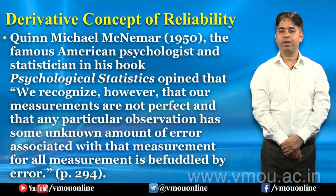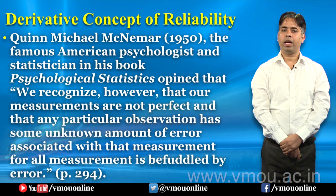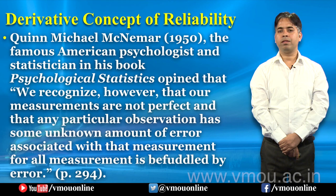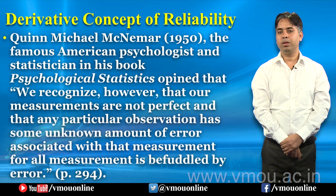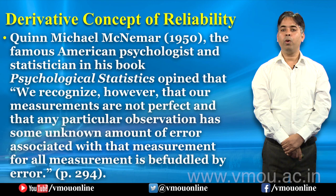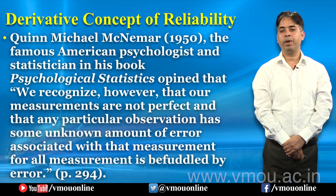Quinn McNemar मूलतः एक psychologist और statistician थे। उन्होंने किताब Psychological Statistics में यह बात प्रतिपादित की थी कि 'measurement for all measurement is befuddled by error' — जो measurement है, सारे measurements के लिए, वो कहीं न कहीं confound होता है, कहीं न कहीं प्रभावित होता है विभिन्न प्रकार की त्रुटियों से, विभिन्न प्रकार के error से।